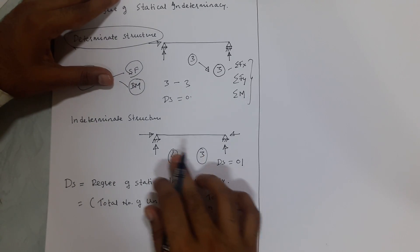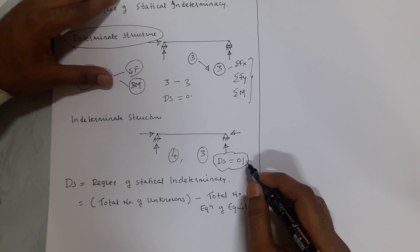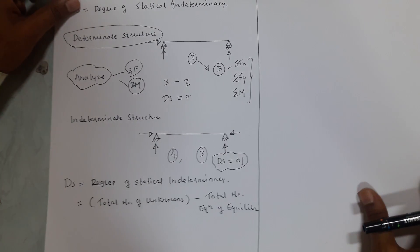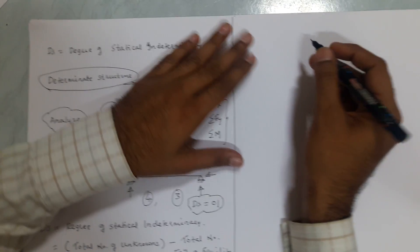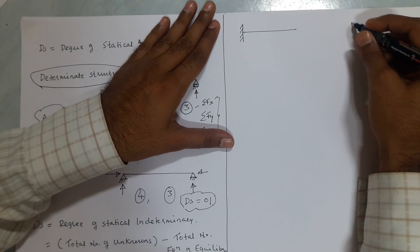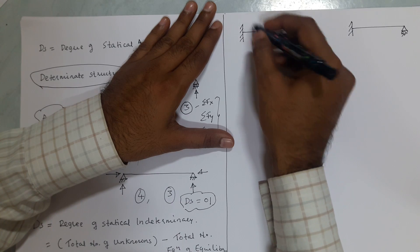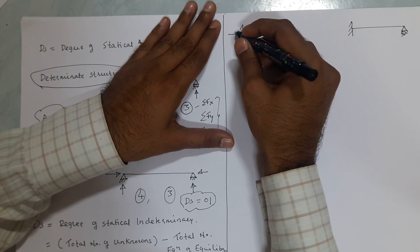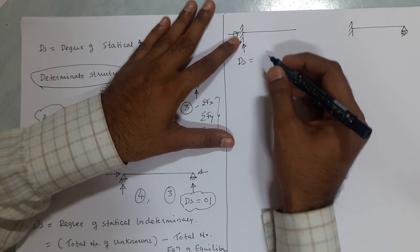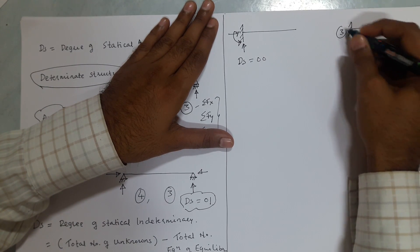When the degree of indeterminacy is one, two, three, four — depending upon the unknowns — the structure is indeterminate. For example, a cantilever beam has a horizontal reaction, vertical reaction, and a moment at the fixed support — three unknowns and three equations of equilibrium — so DS equals zero.